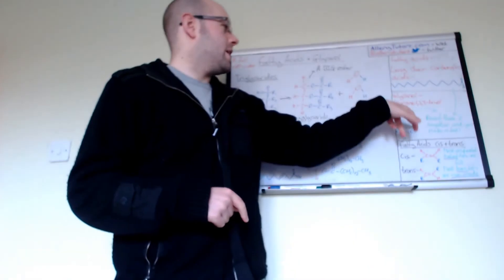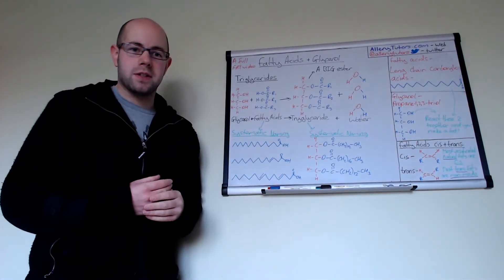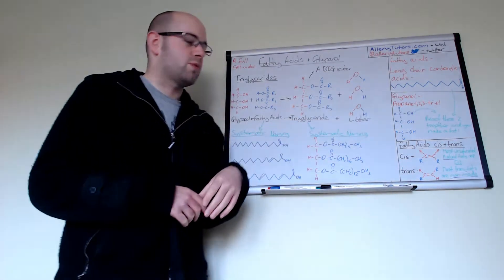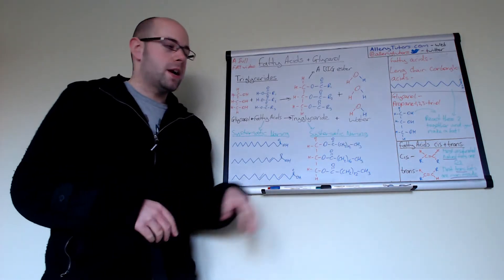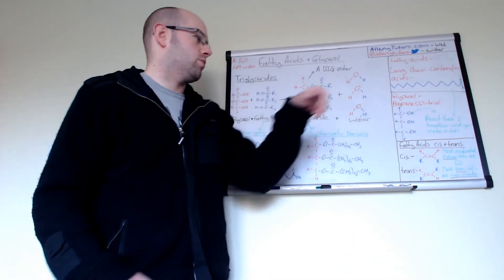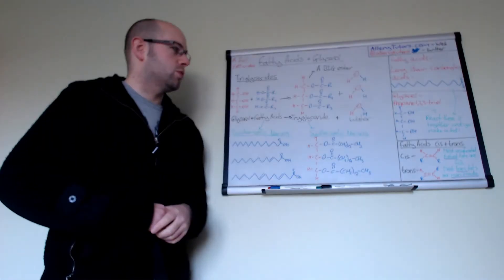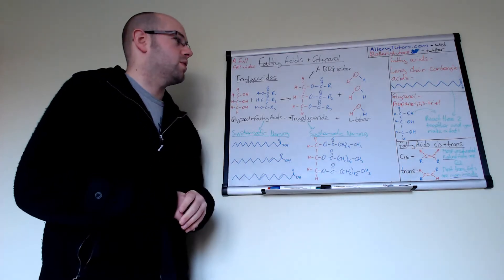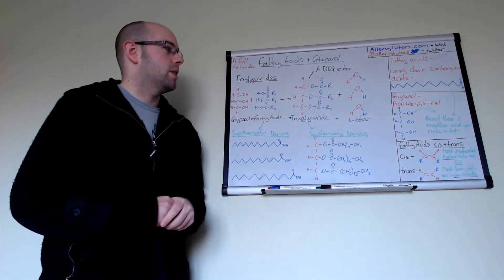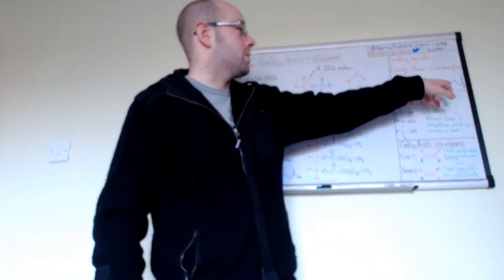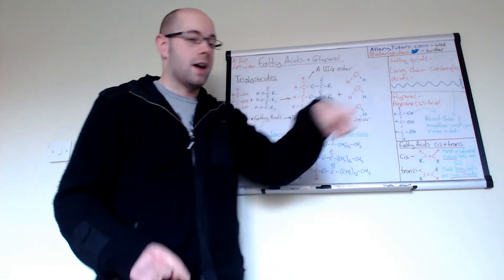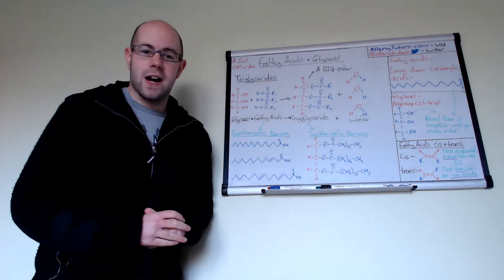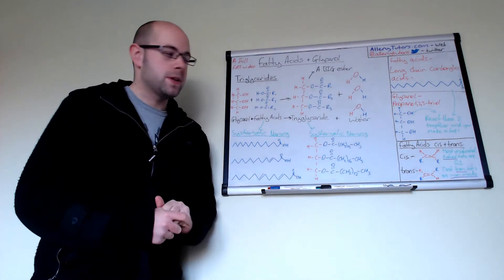Glycerol has an IUPAC name of propane-1,2,3-triol. It basically has three alcohol groups all joined to a propane molecule. And actually if you join your carboxylic acid together with your glycerol, you will actually make a fat, which is what you would find in foods.